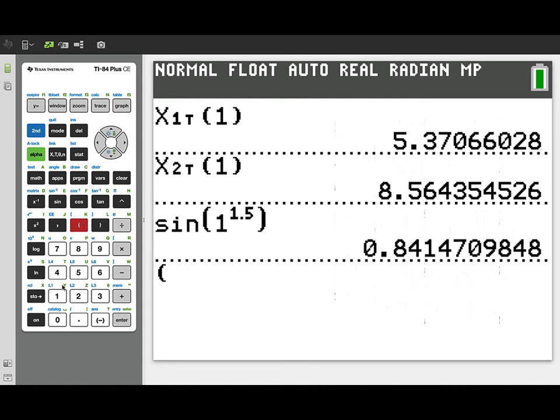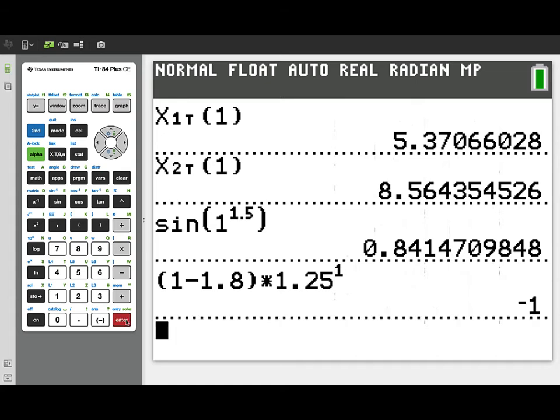Now let's evaluate the velocity of particle Q at that same time. So I'm substituting 1 for t. So I've got 1 minus 1.8 times 1.25 to the first power.